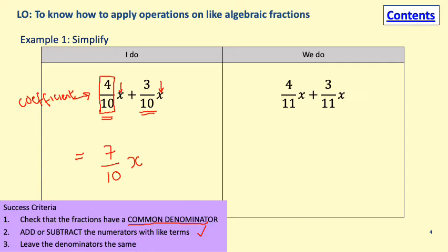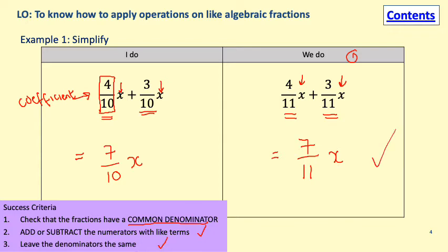Pause the video and give yourselves 30 seconds to try and solve the first we-do. The denominators are the same and the variables are both the same, so we just have to add the numerators. 4 plus 3 gives us 7; the denominator stays the same. Give yourselves the mark if you got that right.